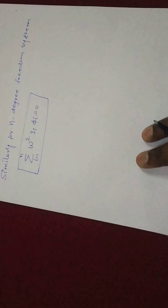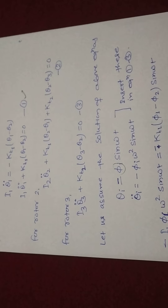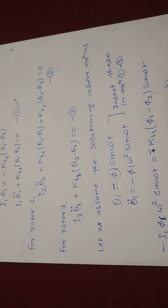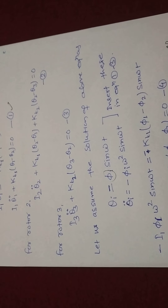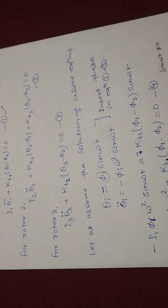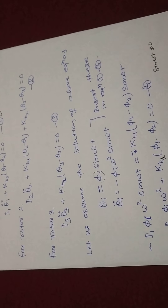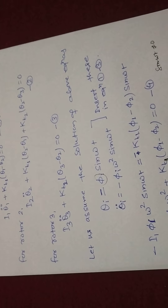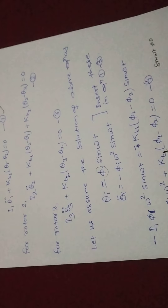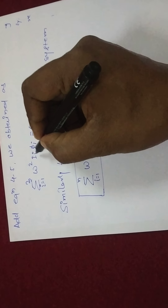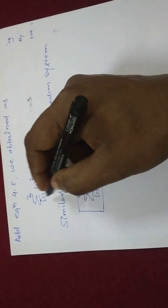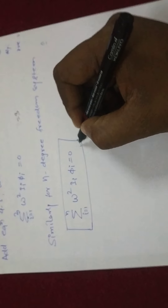Adding equations 4, 5, and 6 together, the KT1 and KT2 terms cancel out — for instance, KT1 phi 1 appears with opposite signs and cancels, as does KT2 phi 2. After cancellation, the only remaining term is the summation of omega squared times Ii times phi i equals 0, for i equal to 1 to 3. For n rotors, this generalizes to i equal to 1 to n, giving the generalized equation for an n-degree-of-freedom system from which we can calculate the natural frequency of the multirotor system.